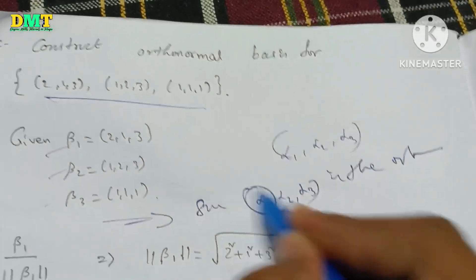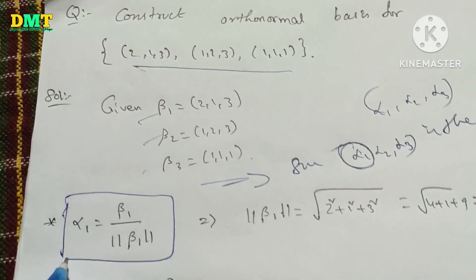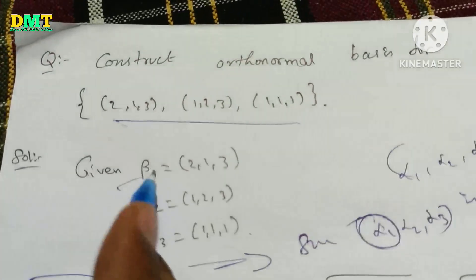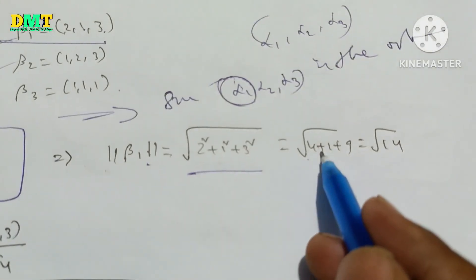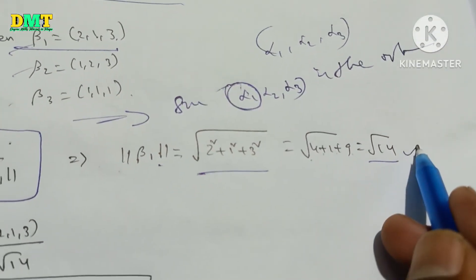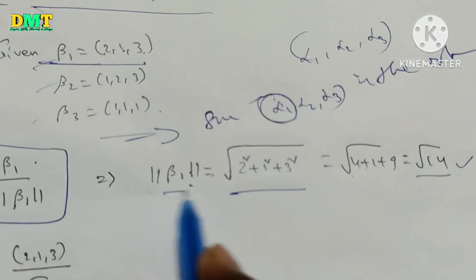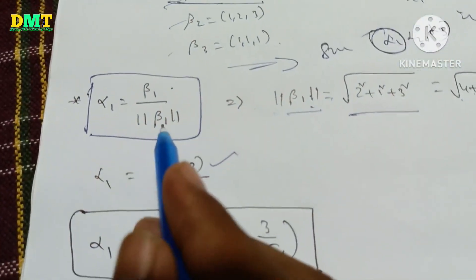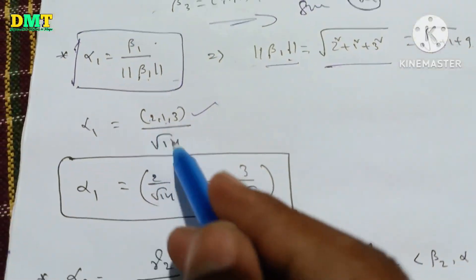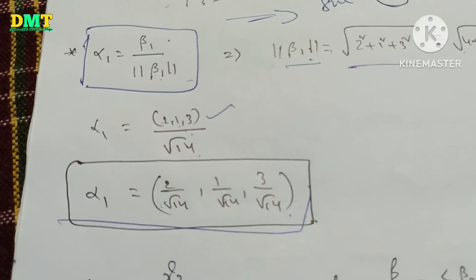First, alpha1 value is equal to beta1 divided by norm beta1. Beta1 value is equal to root of 2 squared plus 1 squared plus 3 squared. Root of 4 plus 1 plus 9 is root 14. So beta1 is equal to (2, 1, 3), and norm beta1 is equal to root 14. So alpha1 is equal to (2/root14, 1/root14, 3/root14). This is the alpha1 value.